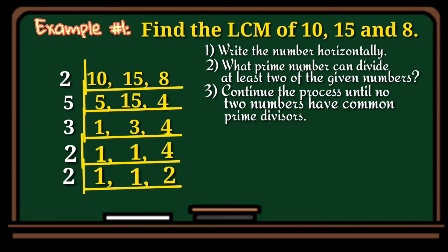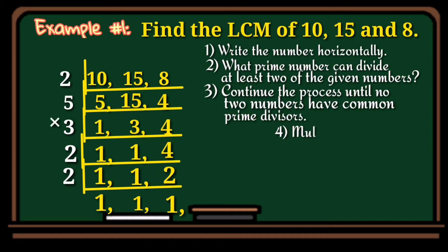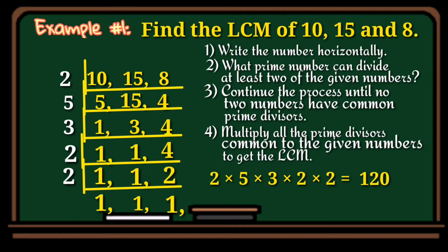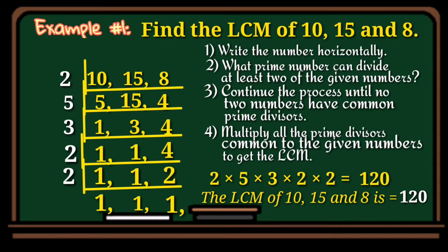Continue dividing with 2: 1 divided by 2 cannot be so bring down 1, 1 divided by 2 cannot be so bring down 1, and 2 divided by 2 is 1. All dividends are now 1, so we stop. Now multiply all the divisors: 2 times 5 times 3 times 2 times 2 equals 120. So the LCM of 10, 15, and 8 is 120.